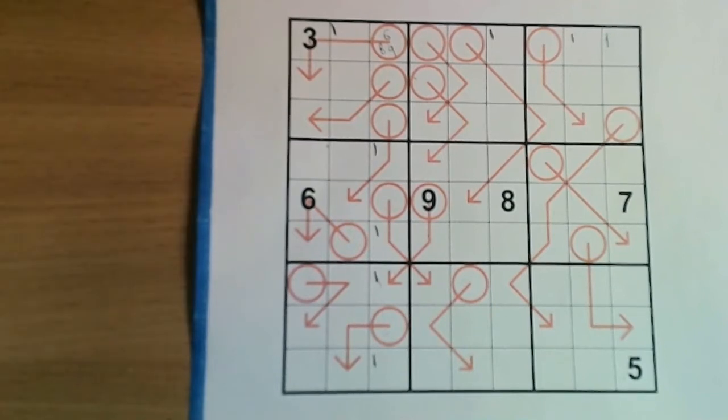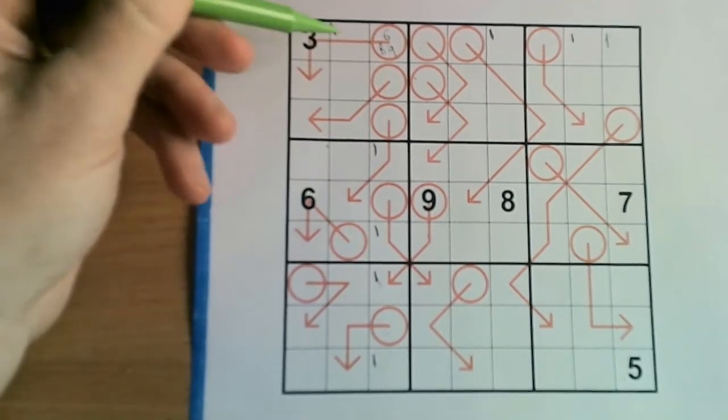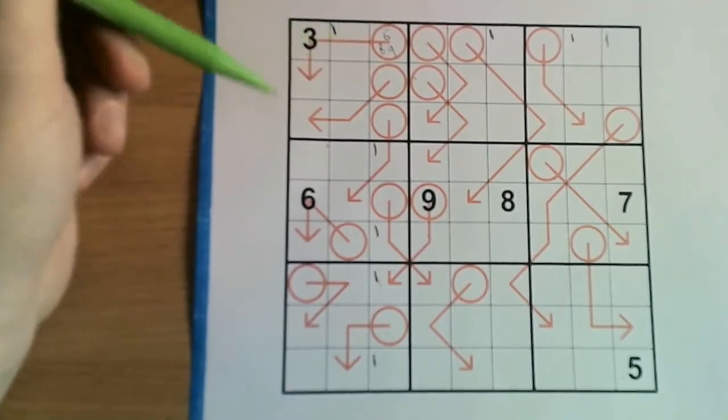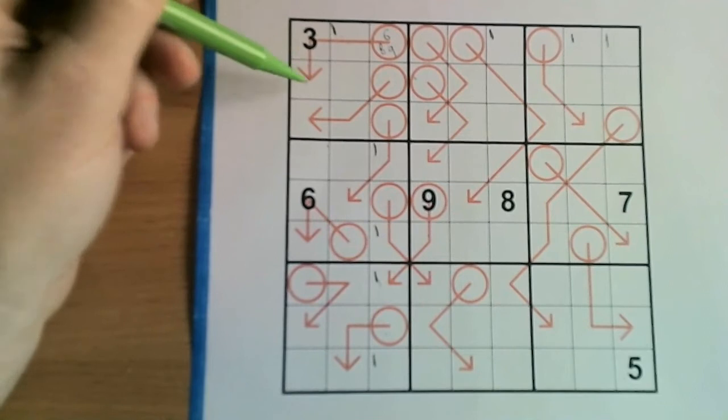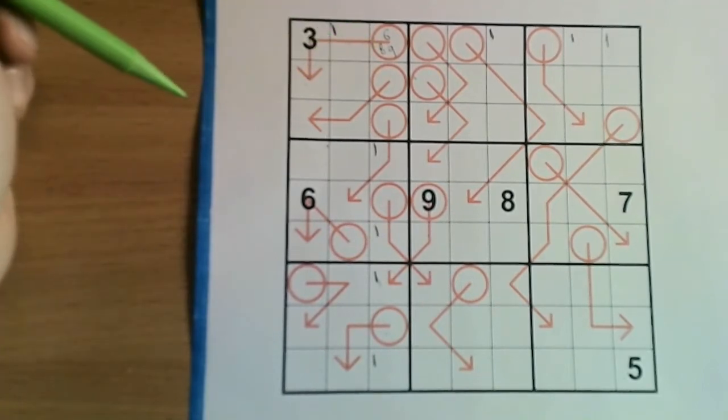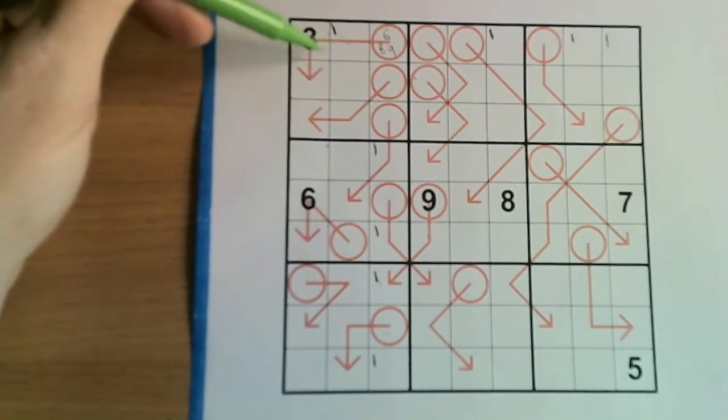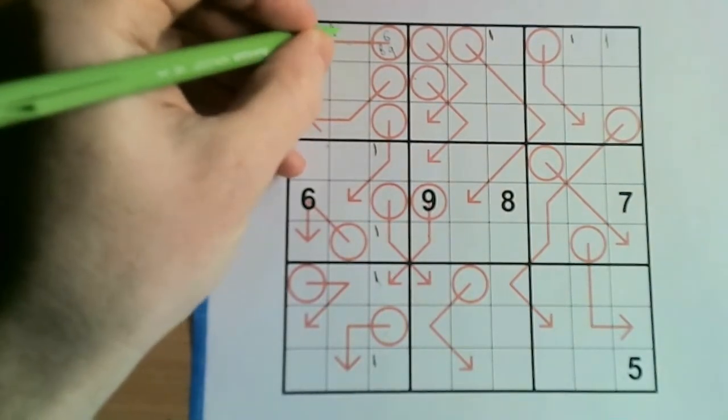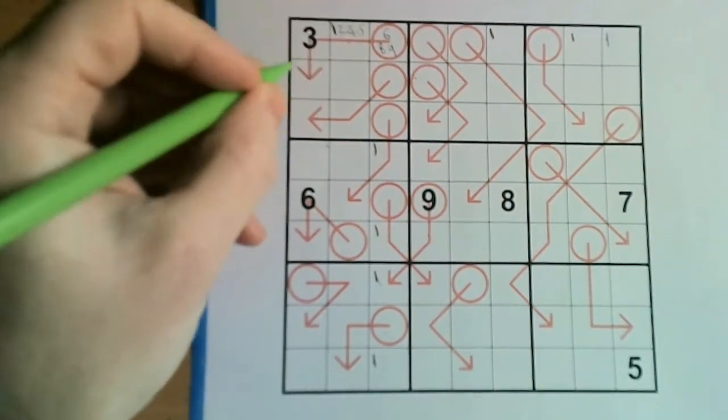But could it be 7? Well no it couldn't, because these would need to sum to 4. And since we've already used the 3 here, then we can't have a 3 and 1, because that would repeat. We can't have a 2 and 2, because that would repeat. So this is 6, 8 or 9. And that means that the maximum digits for these is 5. So these are 1, 2, 4 or 5.